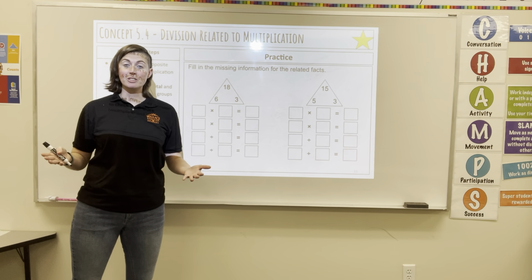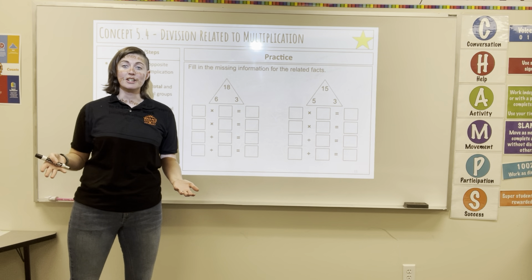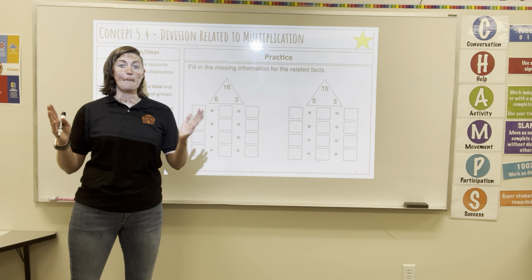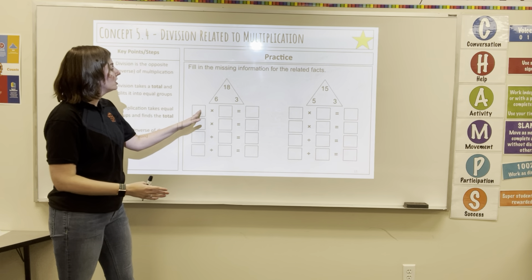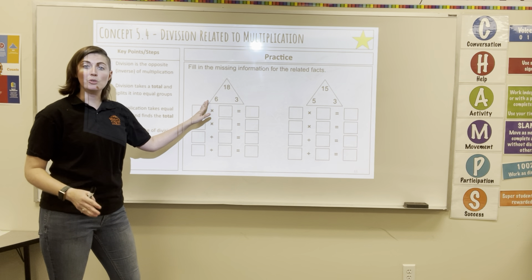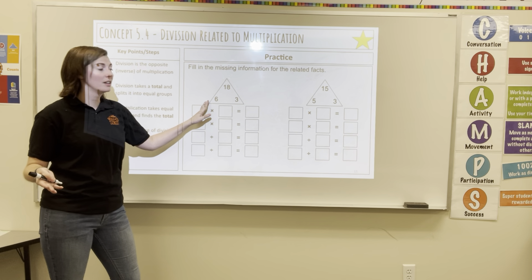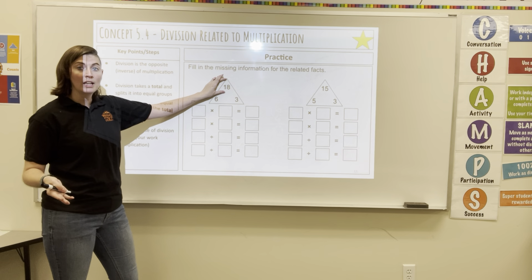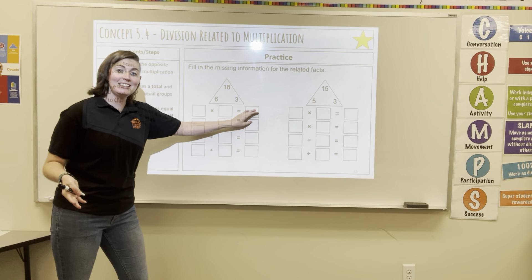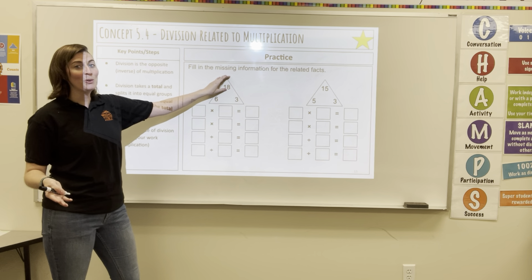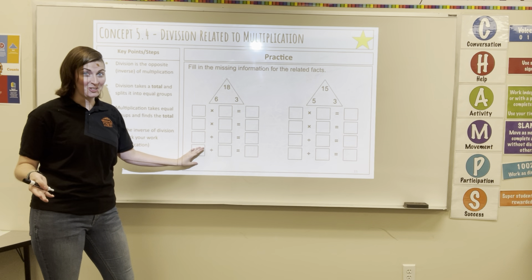It's the same with multiplication and division. They're inverse operations — they're the same but opposite. So we can do our same triangles that we used with addition and subtraction. Our total is what multiplication gets to, and the total is what division starts with.